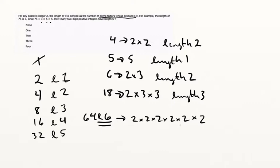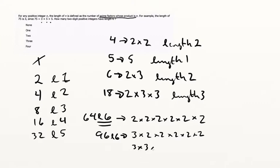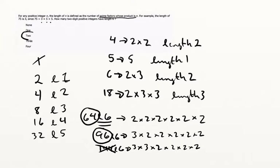There probably aren't going to be many other numbers with length 6, because the only thing we could do is replace one factor with a different prime. For example, 3 times 2 times 2 times 2 times 2 times 2 gives us 96, which also has length 6. The next smallest number with length 6 would be 3 times 3 times 2 times 2 times 2 times 2 — that's 9 times 16, which is 144 — not a two-digit integer. Therefore, we have 2.